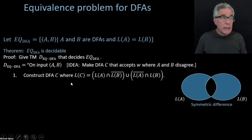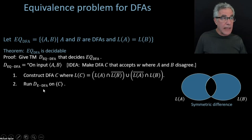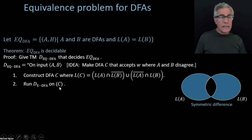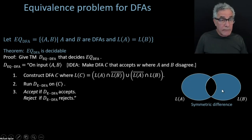A Turing machine can build DFA C using those closure constructions, then run the emptiness tester for DFAs on C to see whether its language is empty. If C's language is empty, we accept because that means L(A) equals L(B). Otherwise, we reject.